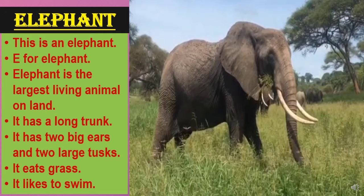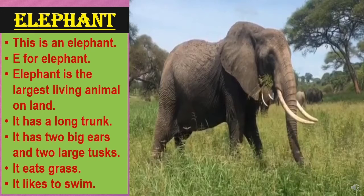This is an elephant. Elephant is the largest living animal on land. It has a long trunk. It has two big ears and two large tusks. It eats grass. It likes to swim.